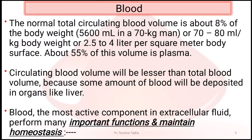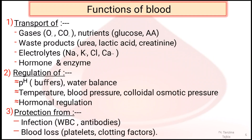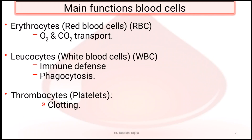Blood is the most active component in extracellular fluid, performing many important functions that maintain homeostasis. These include transport of gases, waste products, electrolytes, hormones, and enzymes; regulation of pH, temperature, blood pressure, and hormonal regulation; and protection from infection and blood loss. Individually, red blood cells transport oxygen and carbon dioxide, leukocytes provide immune defense and phagocytosis.